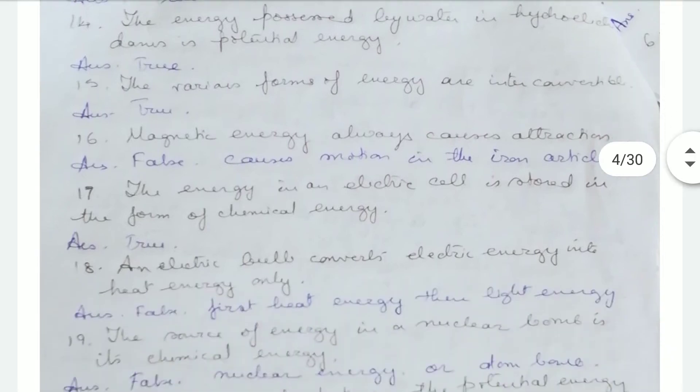Magnetic energy always causes attraction — false, because it causes motion in iron articles only and not in non-magnetic articles. The energy in an electric cell is stored in the form of chemical energy — that's true.